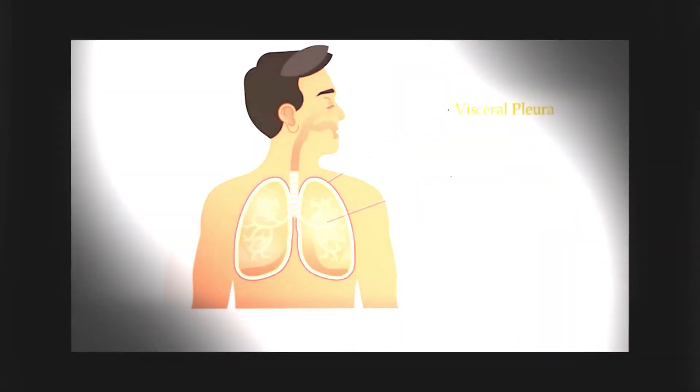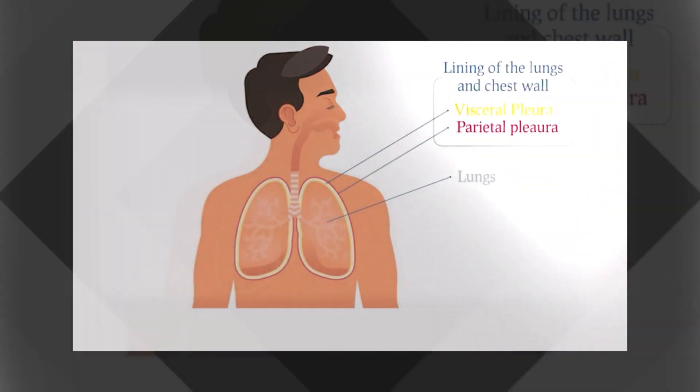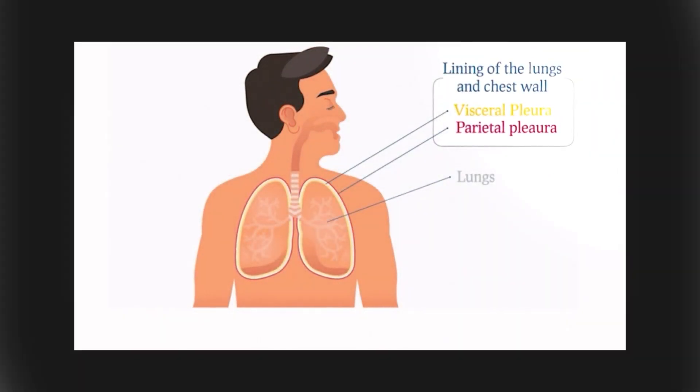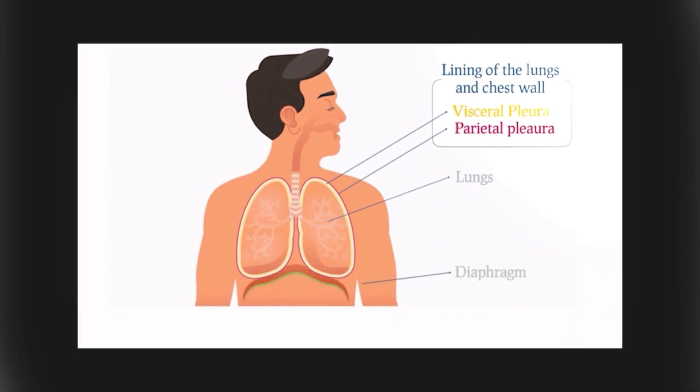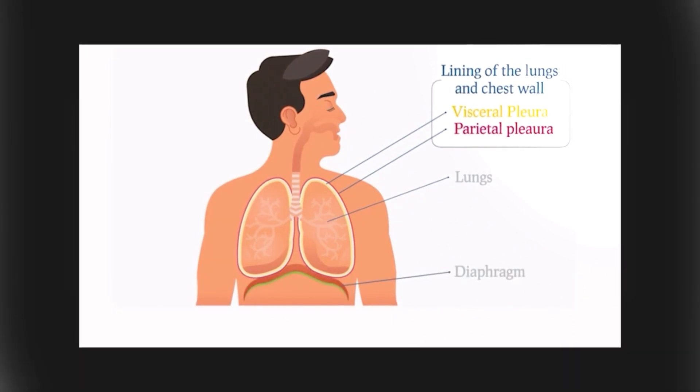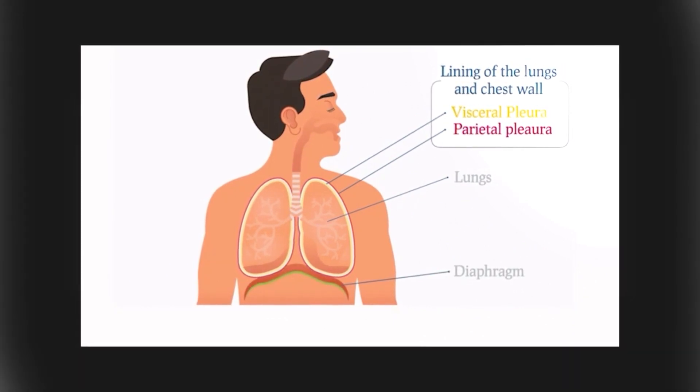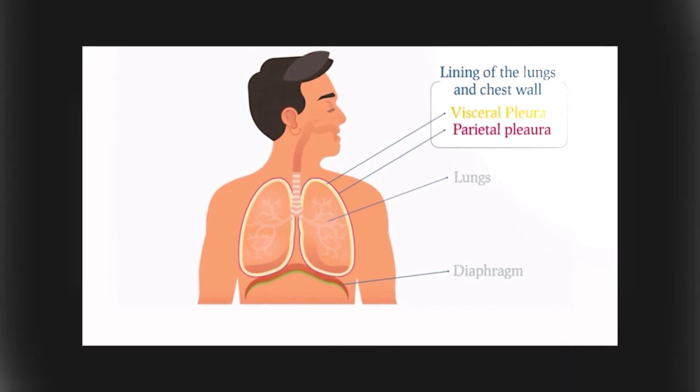The striatal pleura lines the inside of the chest wall and extends over the diaphragm. They create a loop.